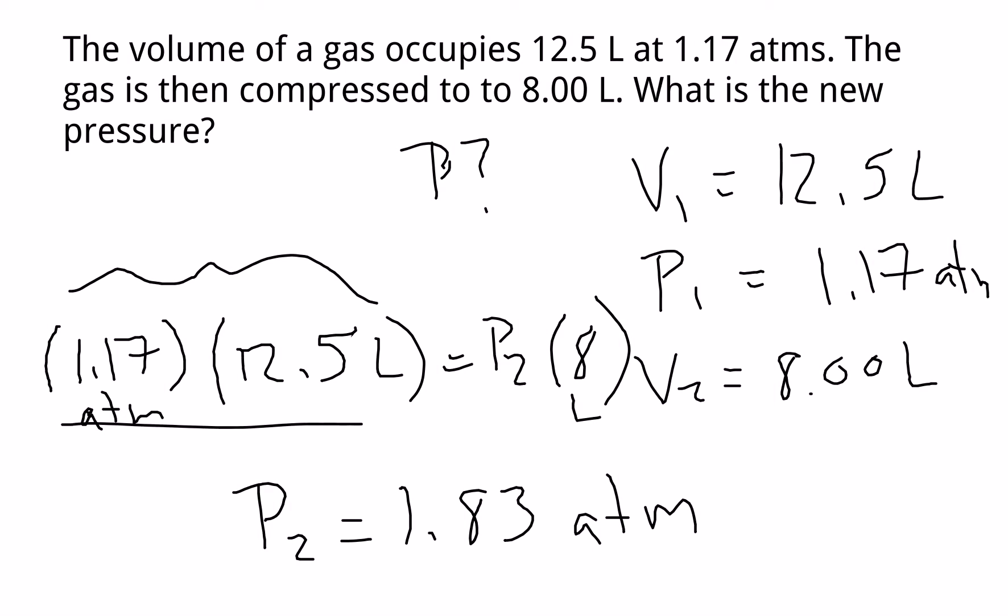you find that P2 equals 1.83 atmospheres. So again, multiply these two together, and then you would divide through by 8 to cancel the 8 on this side. That would give you P2. And if you solve this, you should get that P2 equals 1.83 atmospheres.